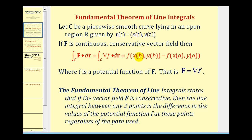The line integral equals the difference in the potential function at the ending and beginning point of the curve. So we first have to verify that the given vector field is conservative, and then if it is and it satisfies the conditions, we then need to determine the potential function and then we can evaluate the line integral.